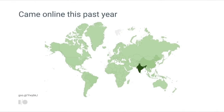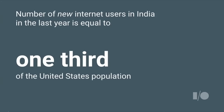Beyond a snapshot of where users are today, what's interesting is how this has changed. Looking at the pure number of users who came online in the last year by country, India is clearly dominant. India had 108 million internet users come online in a single year — a 30% year-over-year growth. That's 10 times the growth seen in China and over 100 times that of any other country.